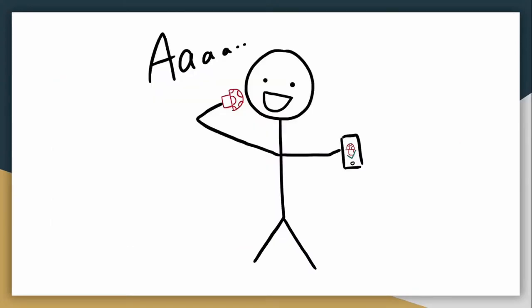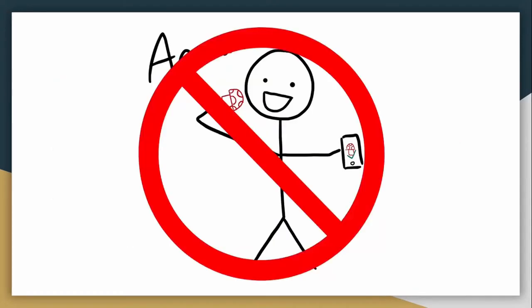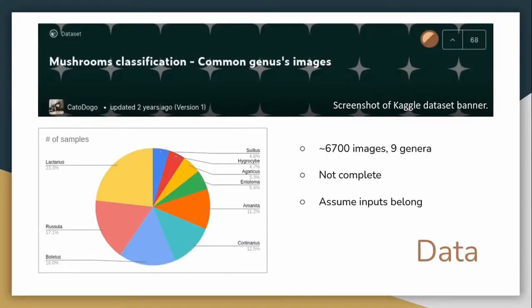So is our project a poison detector? No. Our model has many limitations and cannot guarantee safety. The main limitation is that our dataset of 6700 images, found on Kaggle, only contains nine genera instead of all the mushrooms in the world. We chose to simply assume that all of our inputs belong to one of the nine genera.